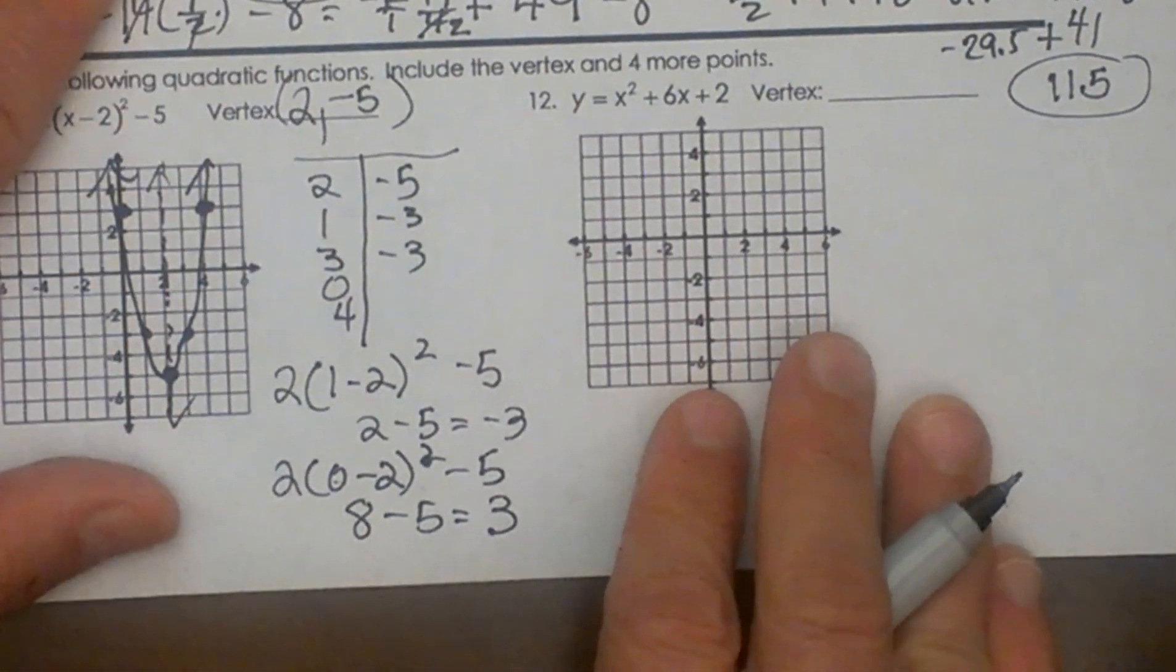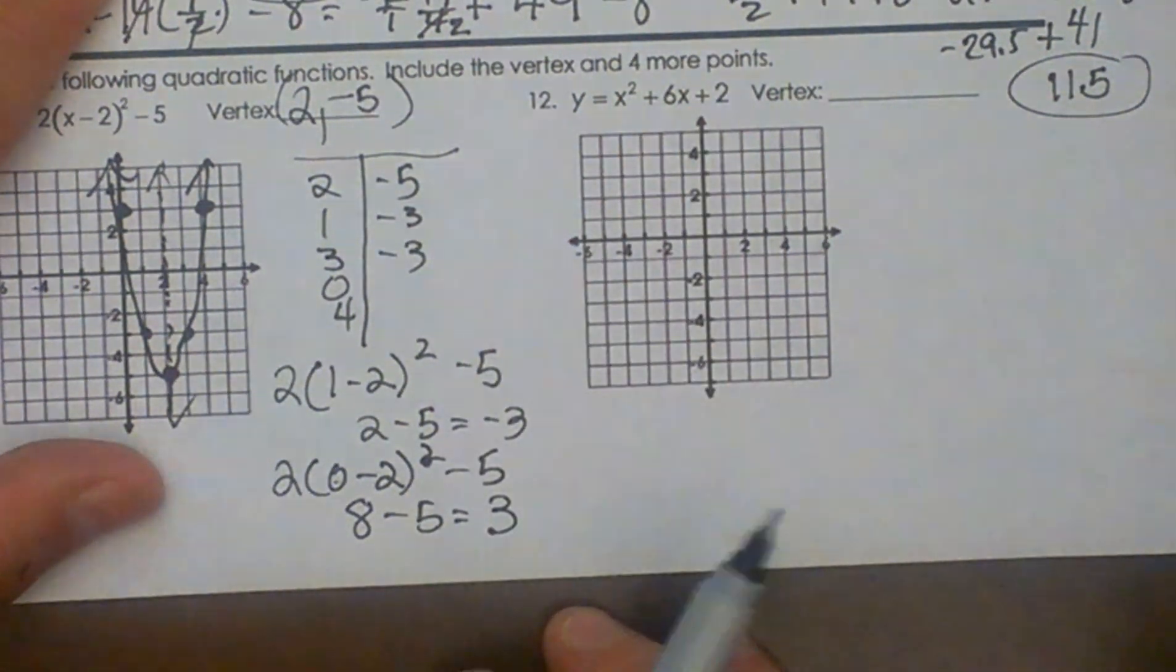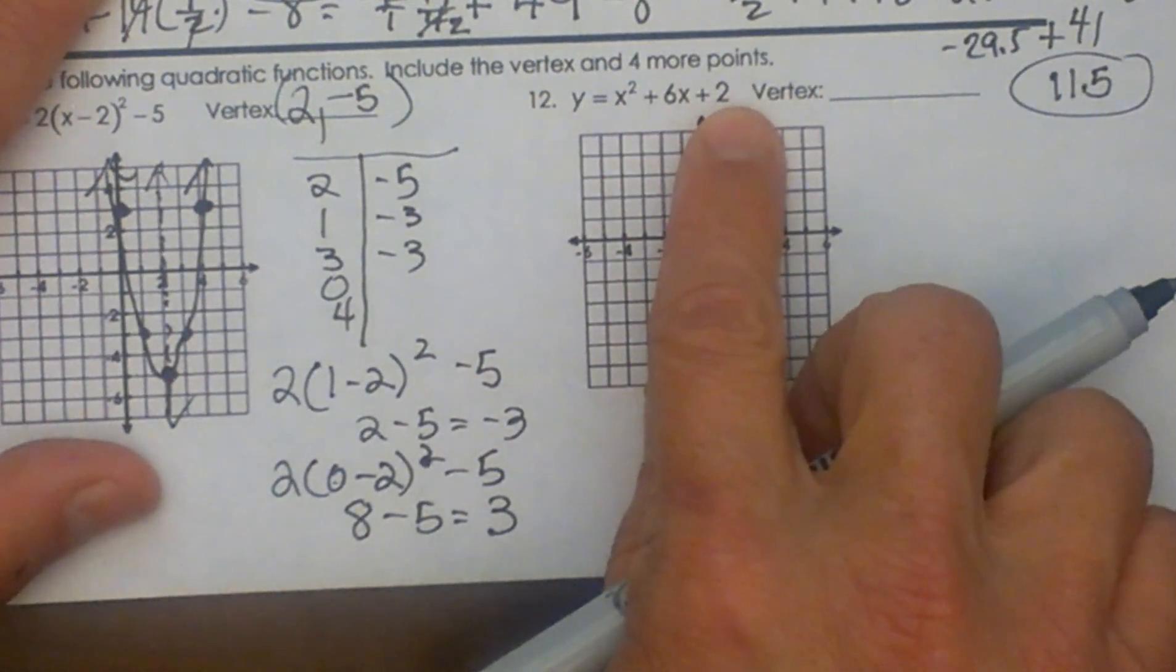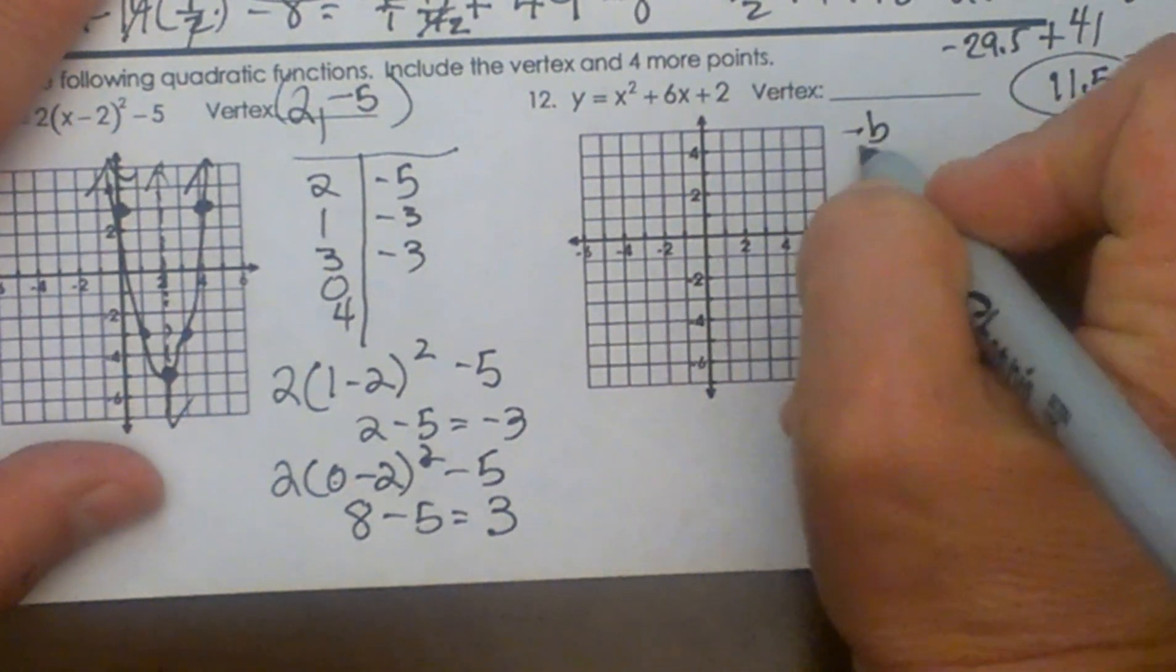Now let's look at this one. This one is not in vertex form. So I need to find my vertex. This is in standard form. To find the vertex from standard form I'm going to use negative b over 2a.